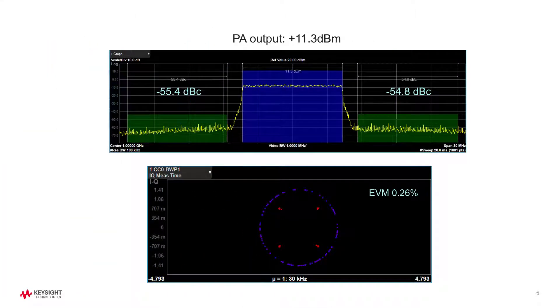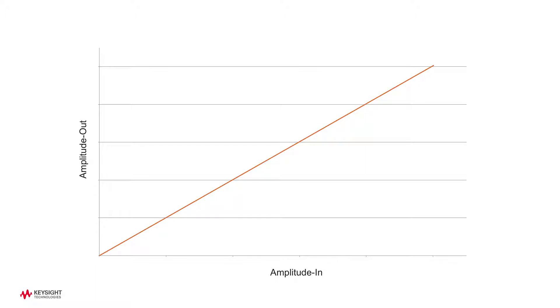If you enable DPD while maintaining same power level, you can see ACPR and EVM are significantly improved, and it's a lot closer to the linear operation. So how does DPD do its trick?